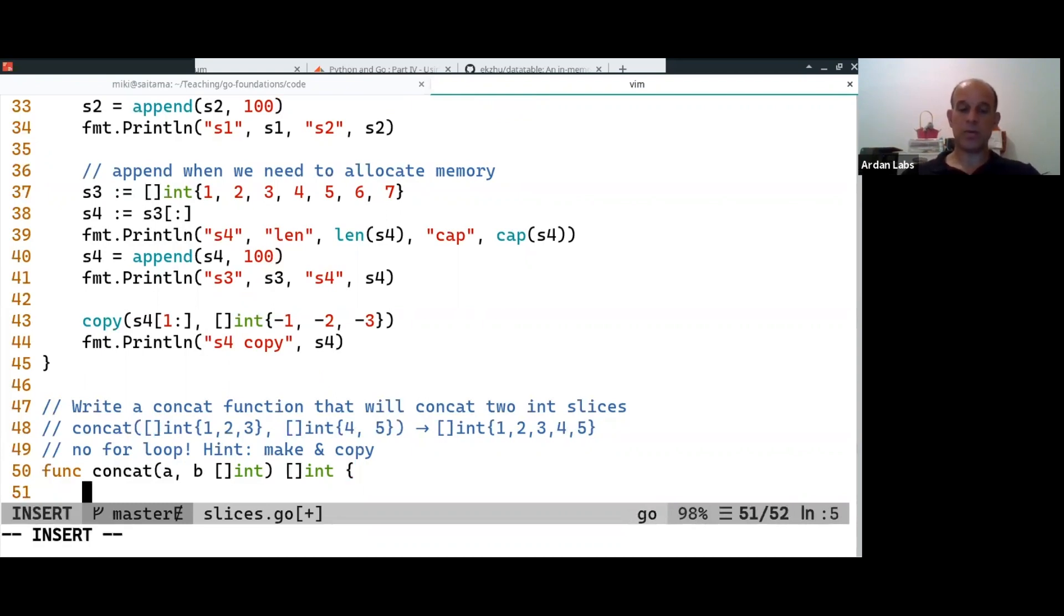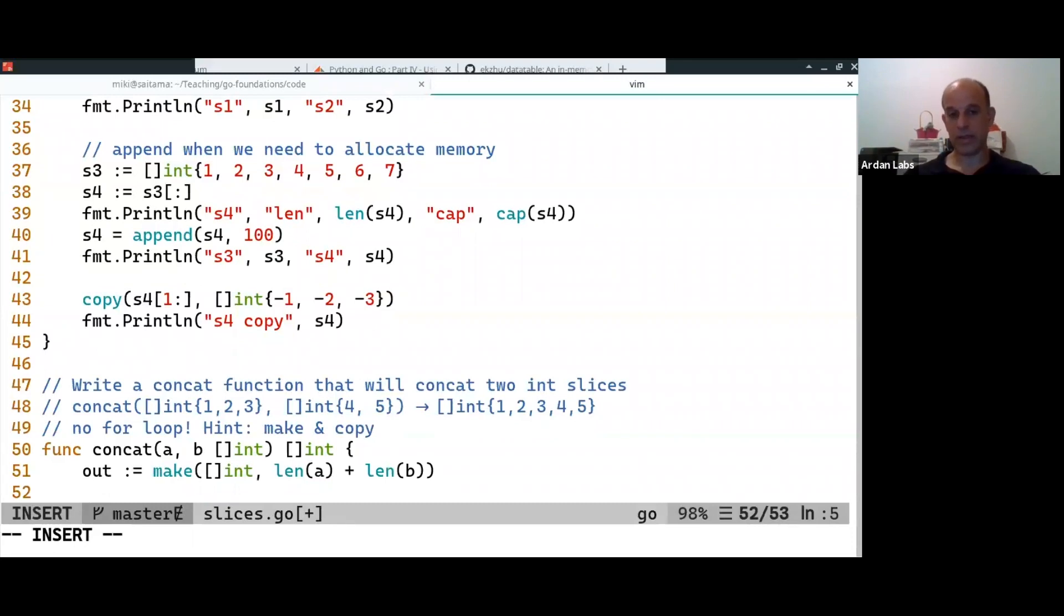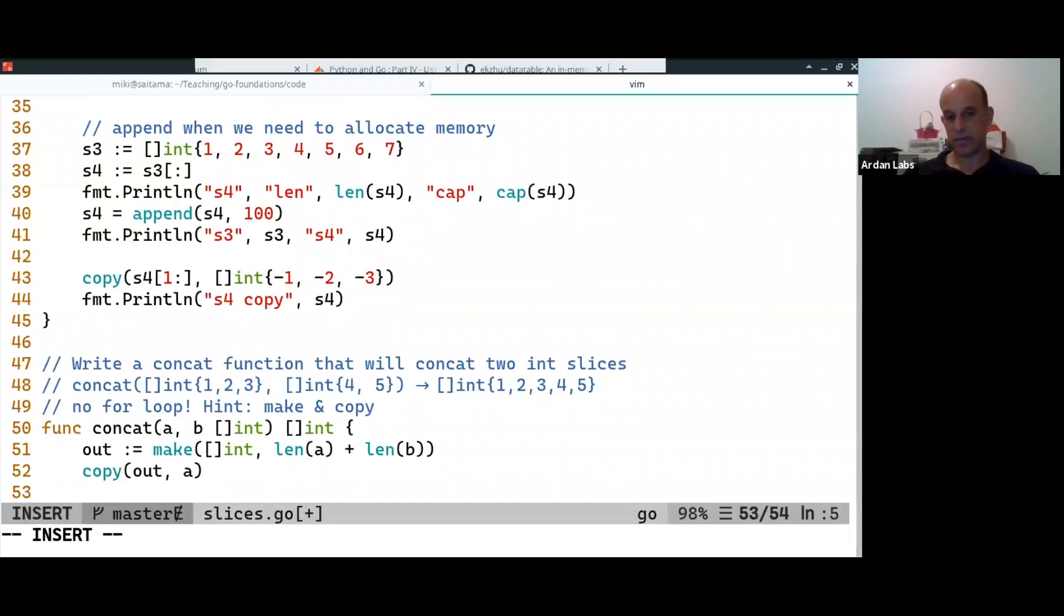So first thing we do is we create the output slice and we say we want an int slice and it should be the size of len of A plus len of B. So we pre-allocate the whole memory for it. And now we're going to copy to output A. So this is copying the first slice.